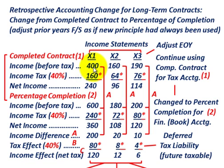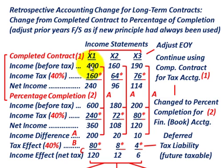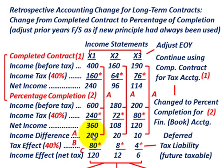Looking at income before taxes for the completed contract method in year X1, that's $400,000. When we change to the percentage of completion method for book accounting purposes, income before taxes changes from $400,000 up to $600,000. So the income difference for year X1 is $200,000 — the percentage of completion method shows greater income of $200,000.